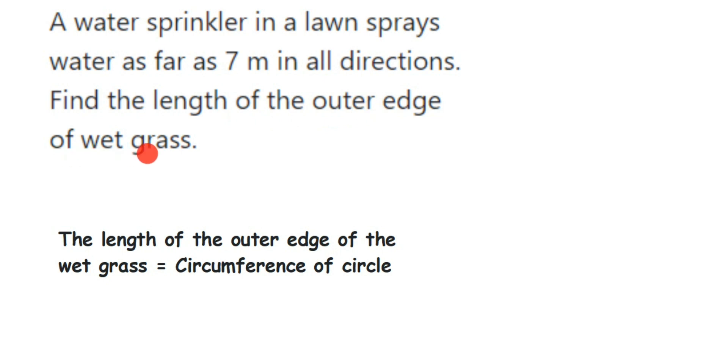They have given that there is a water sprinkler. Now suppose this is a water sprinkler here. We know that when a water sprinkler rotates and sprays water, it forms a circular pattern. And the distance we have given is 7 meters.